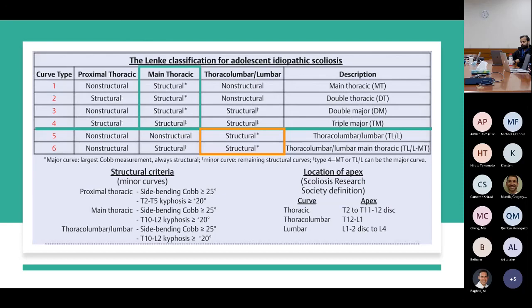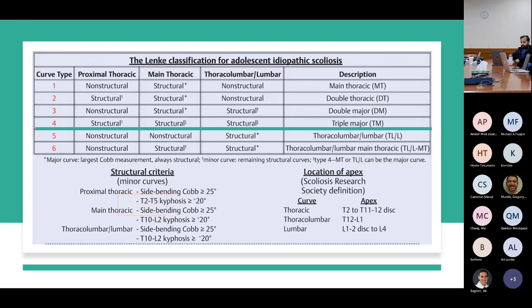Lenke also introduced the sagittal plane into his classification, since Harrington only based his classification on AP coronal measurements. Because scoliosis is a multi-dimensional deformity, Lenke added sagittal plane criteria: the structural criteria indicated that T2-T5 kyphosis or T10-T12 kyphosis greater than 20 degrees indicated a more structural curve.